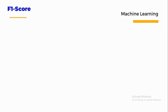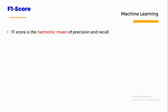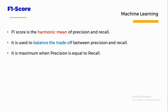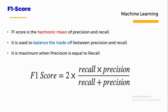The F1 score is the harmonic mean of precision and recall. It is used to balance the trade-off between precision and recall, and is maximum when precision equals recall. It is also described as a weighted average of precision and recall.